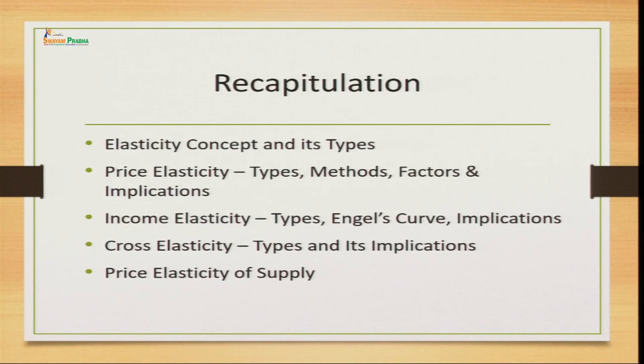In price elasticity, we understood the effect of price on quantity demanded - how much change takes place in quantity demanded due to a change in price, keeping other factors constant. There are different types of price elasticity: highly elastic demand, highly inelastic demand, perfectly elastic demand, perfectly inelastic demand, and unitary elastic demand - five degrees of price elasticity. We also discussed methods of calculating price elasticity: percentage method, arc elasticity method, and total outlay method.